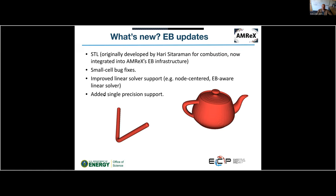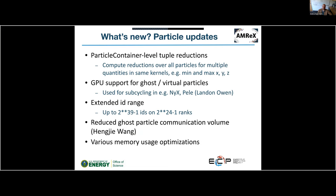A few new things in particle land: we now have particle container-level tuple reductions. For example, if you want to compute the extremes of particle positions — the min and max of x, y, and z across all particles — rather than launching six separate reduction operations, you can launch one reduction operation that does all of them in a single pass, which can be significantly more efficient.